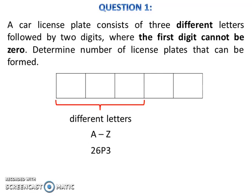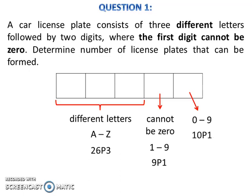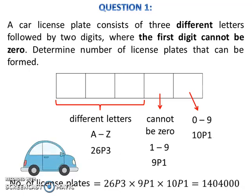The next 2 slots must be filled with digits, where the first digit slot cannot be zero. There are 9 digits from 1 to 9, so the number of ways to put a digit in that slot is 9P1. There are 10 digits from 0 to 9, so the number of ways for the last slot is 10P1. The total number of license plates that can be formed is 26P3 times 9P1 times 10P1.